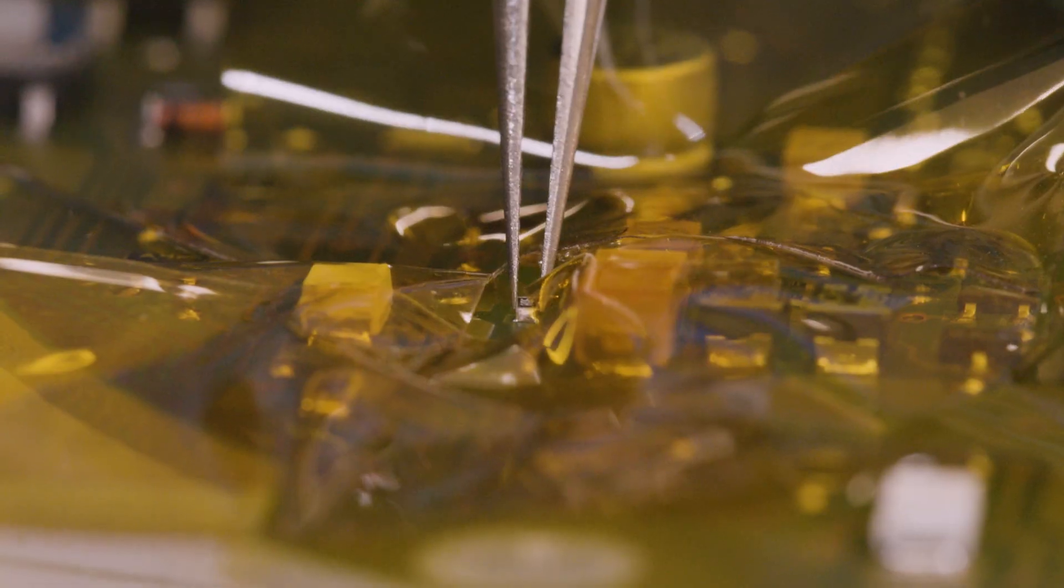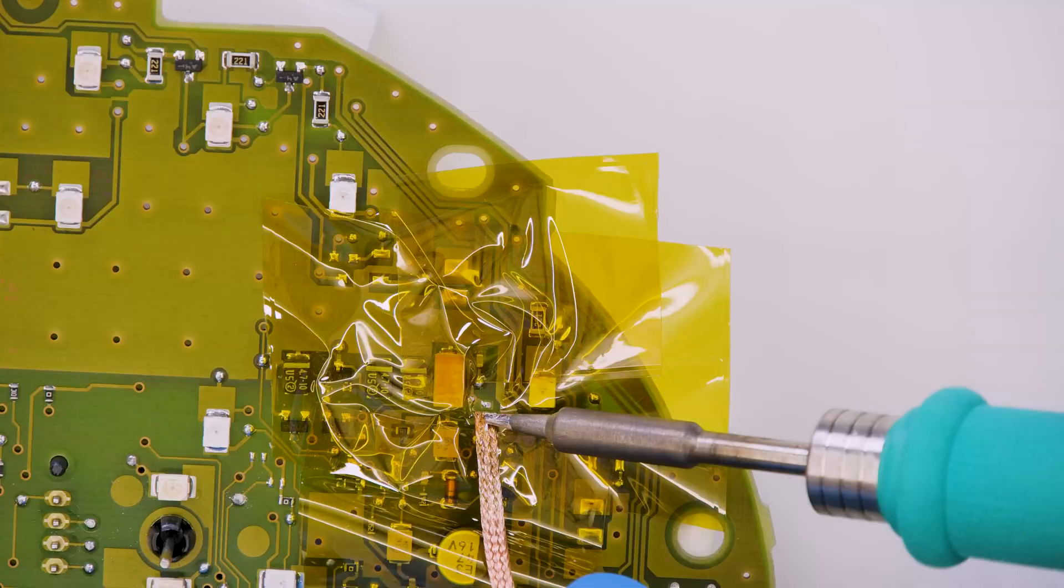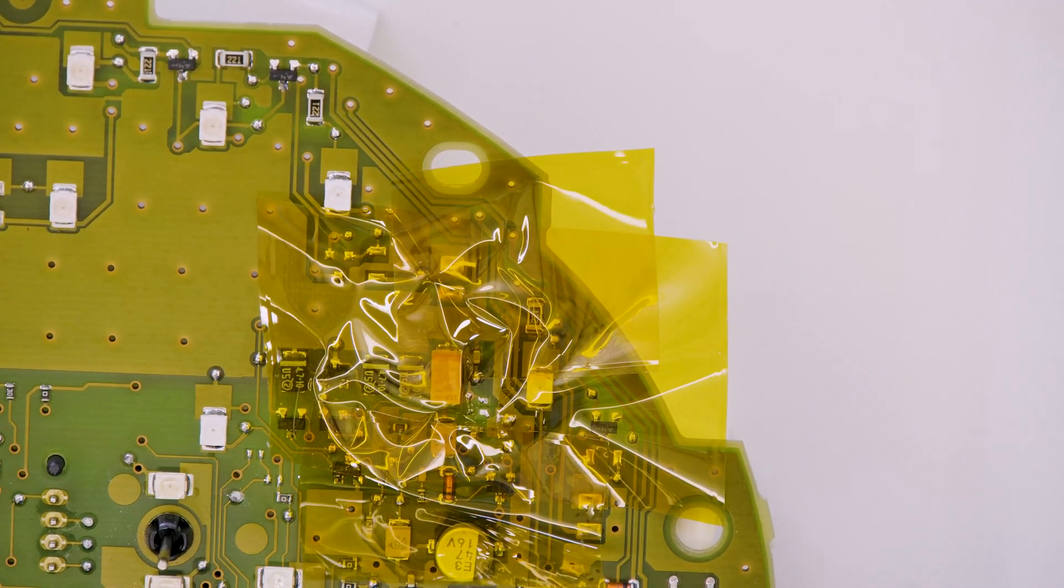With the hot air desoldering iron, undo the resistor. Remove any thin residues with the solder wick.